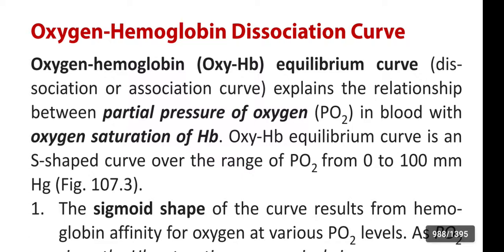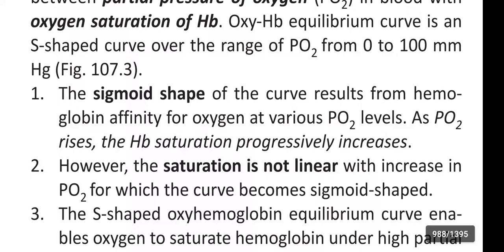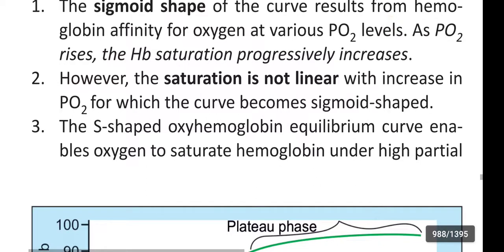The Oxygen-Hemoglobin Equilibrium Curve is an S-shaped curve over the range of partial pressure of oxygen from 0 to 100 mmHg. The sigmoid shape of the curve results from hemoglobin's affinity for oxygen at various partial pressure of oxygen levels. As partial pressure of oxygen rises, the hemoglobin saturation progressively increases. However, the saturation is not linear with increasing partial pressure of oxygen, which is why the curve becomes sigmoid-shaped.